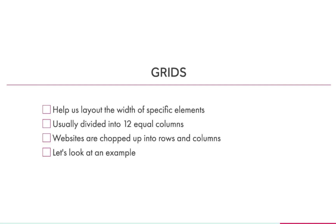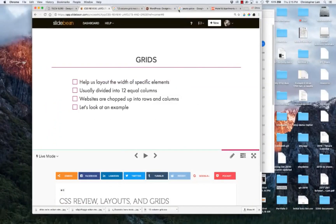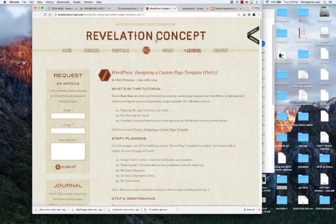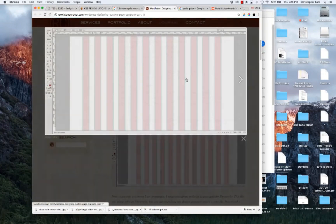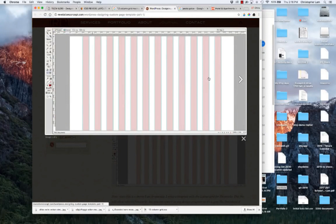One best practice for laying things out is on a grid. Grids help us lay out things by setting specific widths to specific elements. They're usually divided into 12 equal columns, and websites are chopped up into rows and columns. There's a blog post by Revelation Concept — a tutorial about designing a custom page template — that walks through the process of wireframing, and it has some great screenshots showing the grid approach.